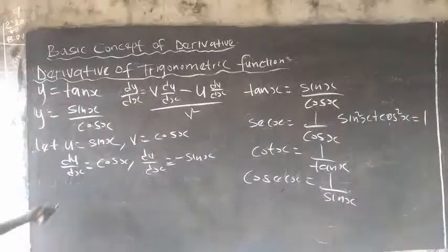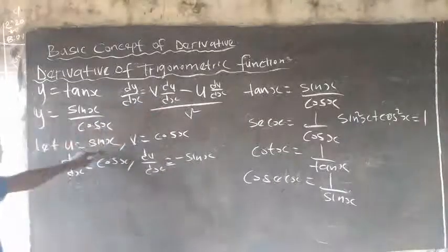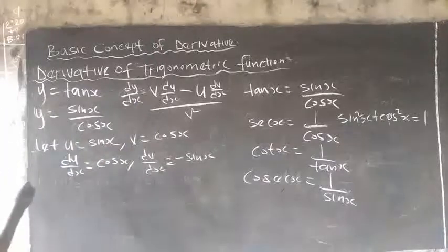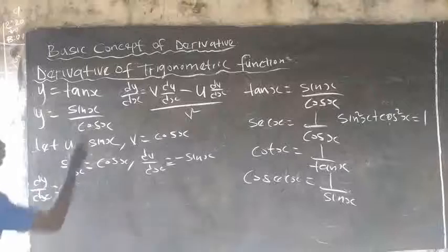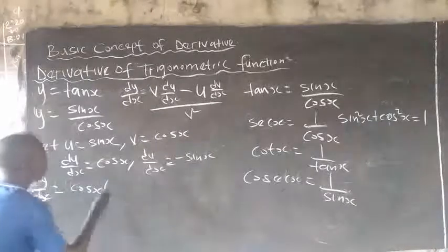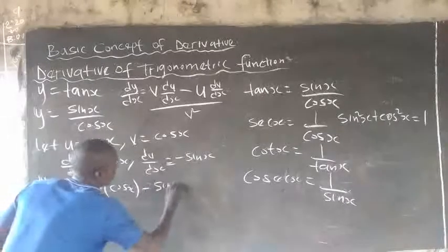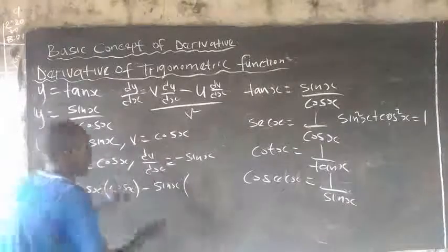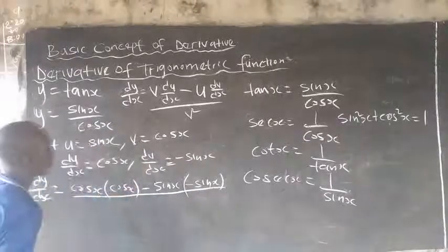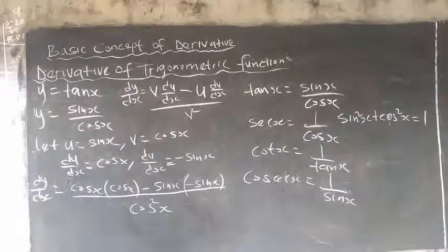So I have v, which is cos s, and du/ds, which is cos s, and dv/ds, which is minus sin s. Substituting these parameters, dy/ds equals v times du/ds, which is cos s multiplied by cos s, minus u, which is sin s, multiplied by dv/ds, which is minus sin s — all over v squared, which is cos squared s.